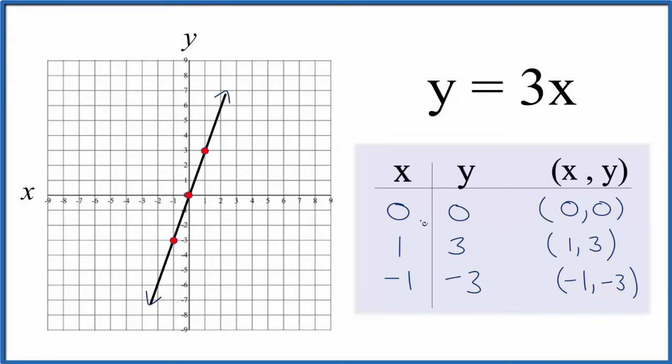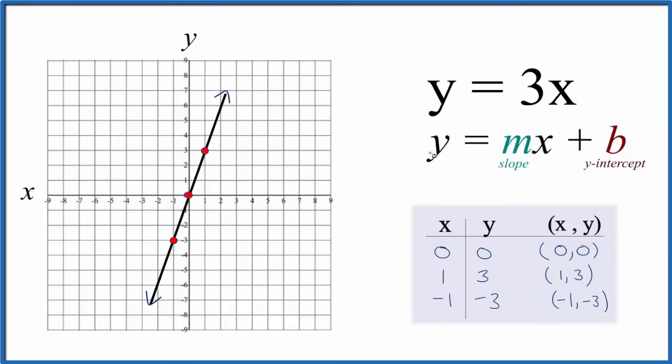Now let's check our work with the slope-intercept formula, y equals mx plus b. We have 3x, the mx part, but no b. If there's no b written, it's 0.